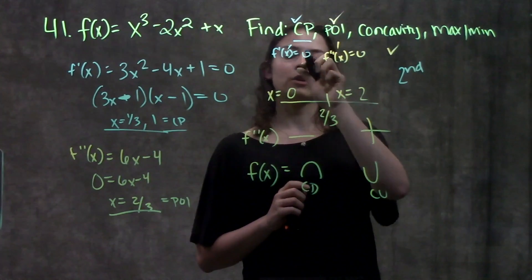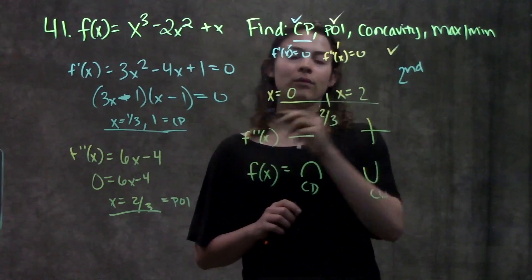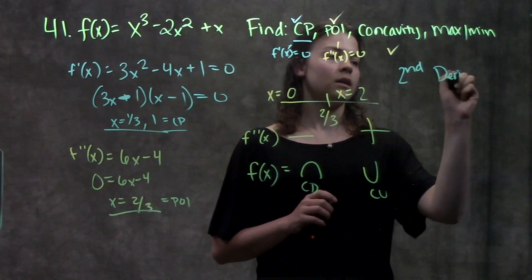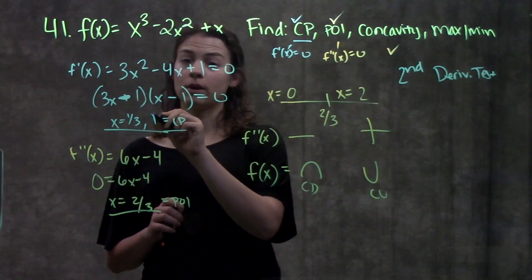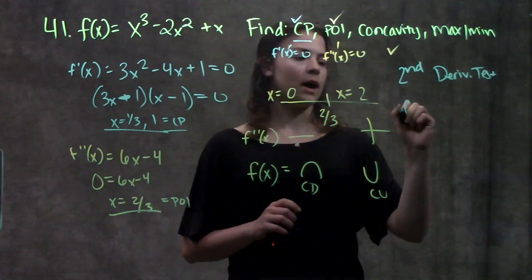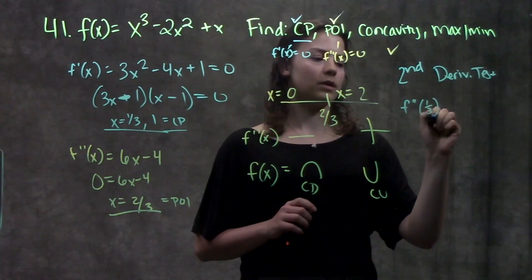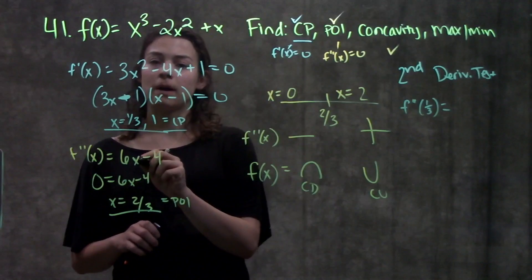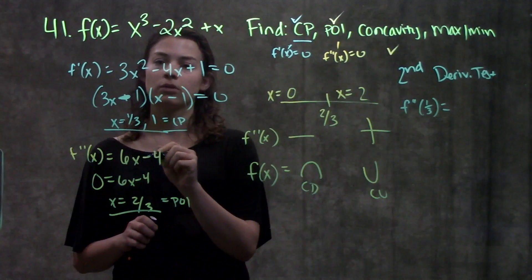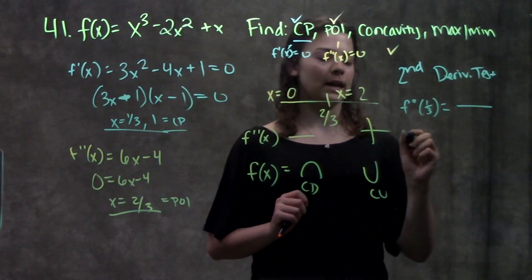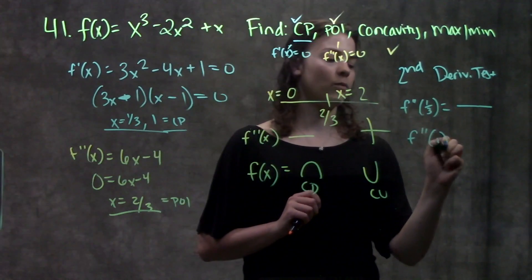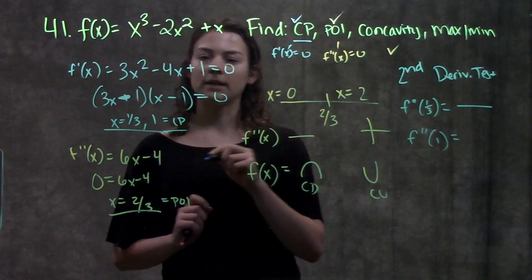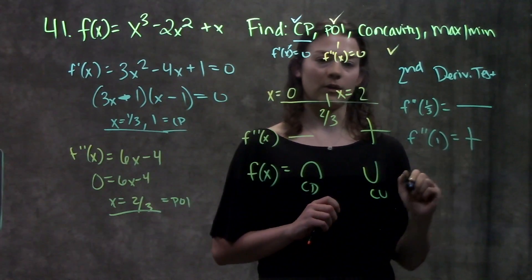You take your critical points, plug them into your second derivative, and look at the sign. So my critical points, remember, are 1 over 3 and 1. So f double prime of 1 over 3. I'm just worried about whether it's positive or negative. 6 times 1 over 3 leaves me with 2 minus 4. This will be negative. And f double prime of my other critical point of 1 will be 6 minus 4. That's a positive value.